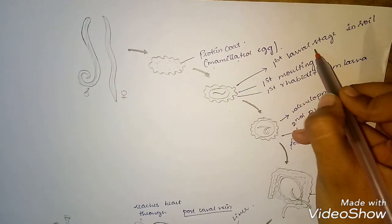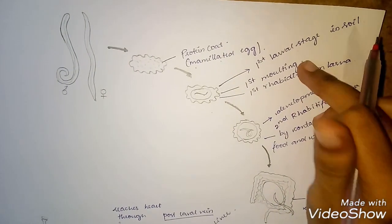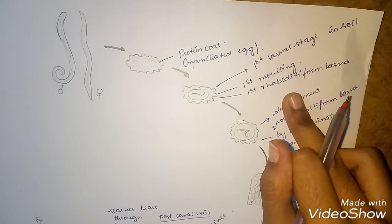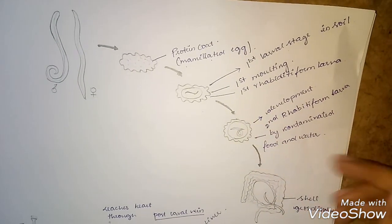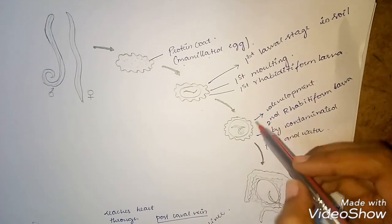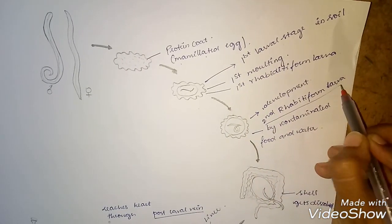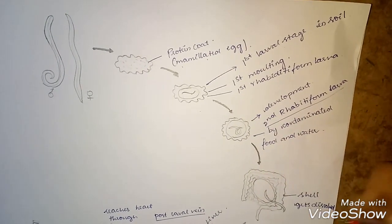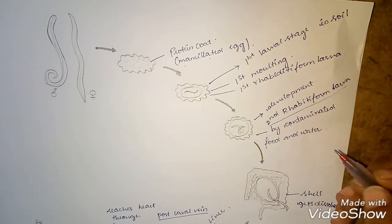The egg undergoes the first larval stage in soil. This is known as first molting and the first rhabditiform larva. It undergoes development in the soil and becomes the second rhabditiform larva.